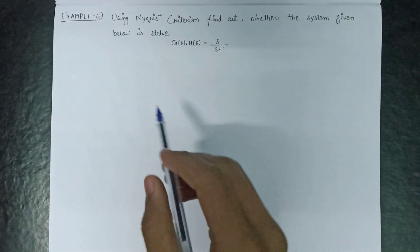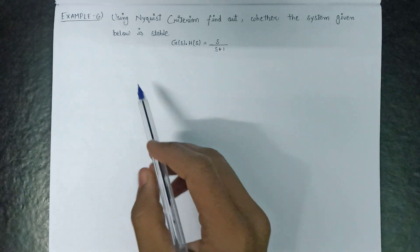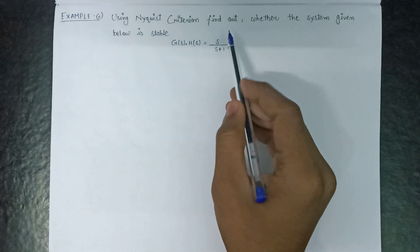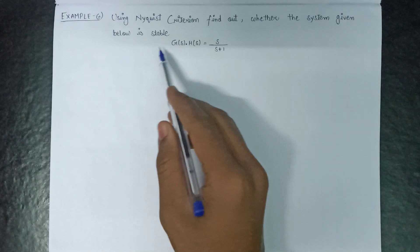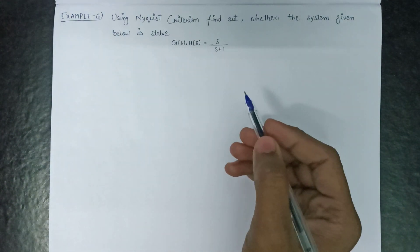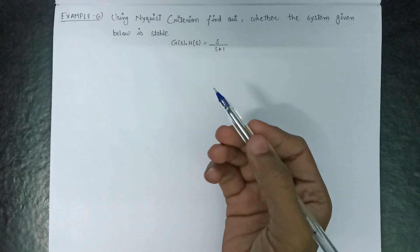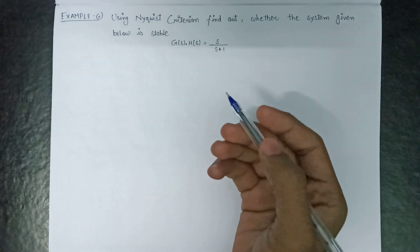Welcome. In this lecture we are going to solve an example based on Nyquist criteria. Using Nyquist criteria, find out whether the system given below is stable or not. Nyquist criteria is used for checking that the system is stable or not. We have to follow all the five steps that we discussed in the previous lectures to find out if our system is stable or not.